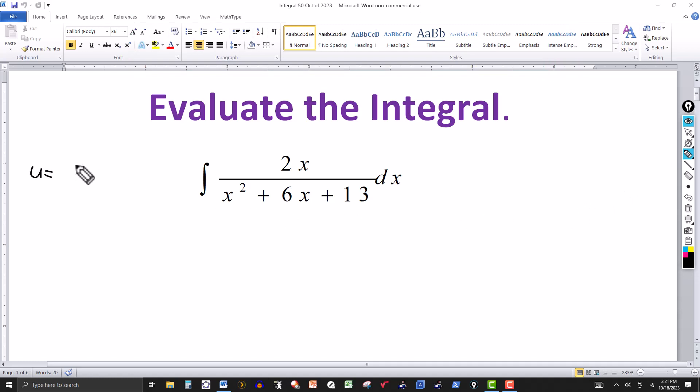Let's look at a u substitution. What if I let u equal x squared plus 6x plus 13? du then would equal 2x plus 6. Now we'd be in business if instead of a 2x in the numerator, we had a 2x plus 6. This would be dx here.